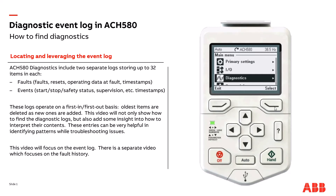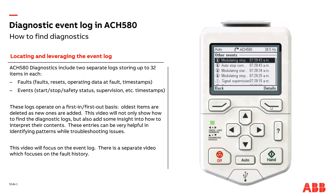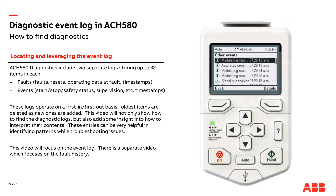One additional item I neglected to cover is what is actually in the event log on a particular entry. Let's go back into the event log, select one of the events, and navigate a bit deeper. Here are the details: the textual description, the corresponding hex code, and what's called the aux code — some faults and events have multiple underlying triggers captured there. We also see the specific date and time when the event occurred, and the drive on-time. That's the details contained in the event log.